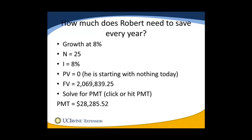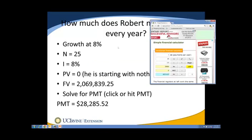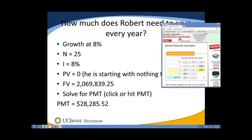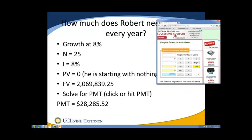Now that we know the goal is to have approximately $2,069,839.25 on day one of retirement, we need to know how much to save annually to get there. We have N=25, I=8% per year, PV=0, and FV=$2,069,839.25. Solving for payment, we would need to save $28,312.87 per year — growing at 8% per year for 25 years — in order to reach the $2 million figure.